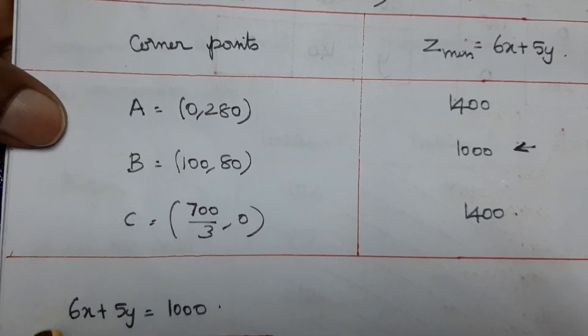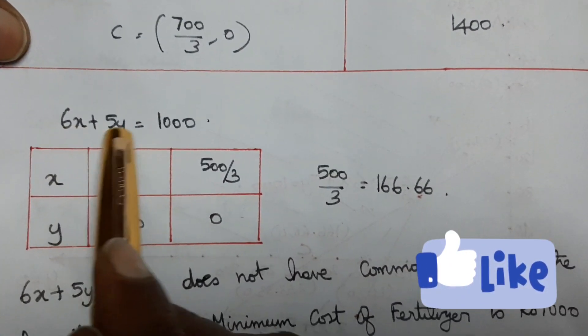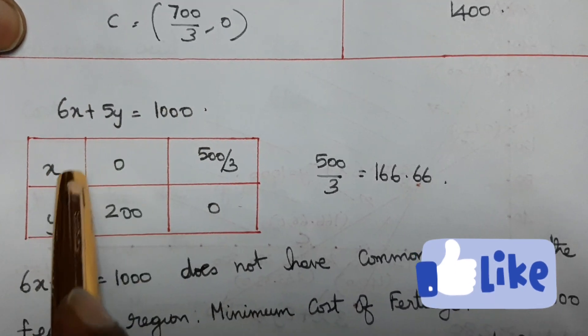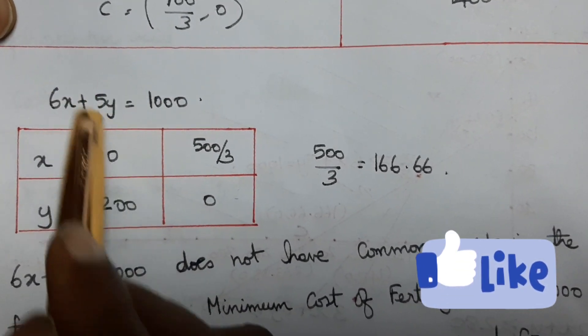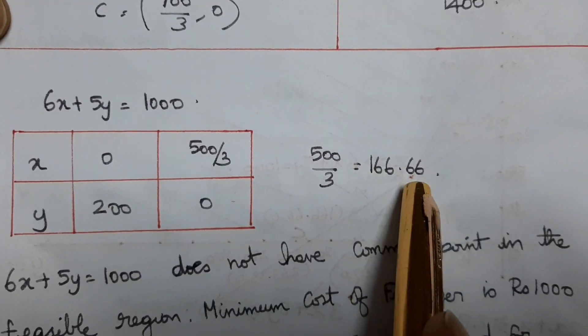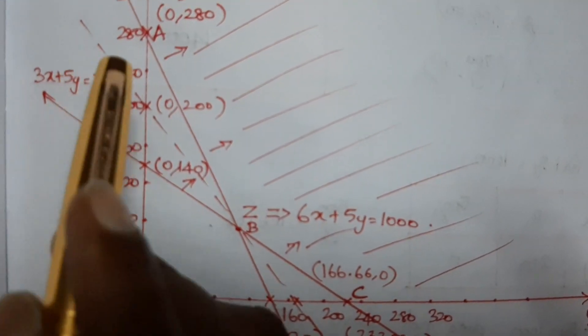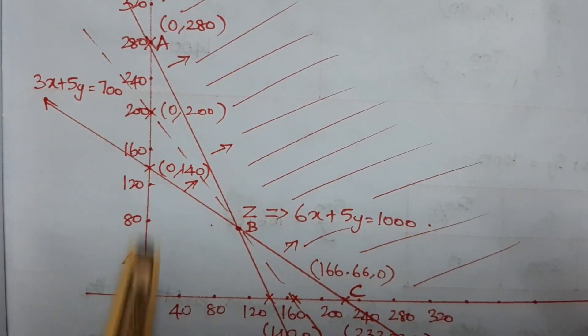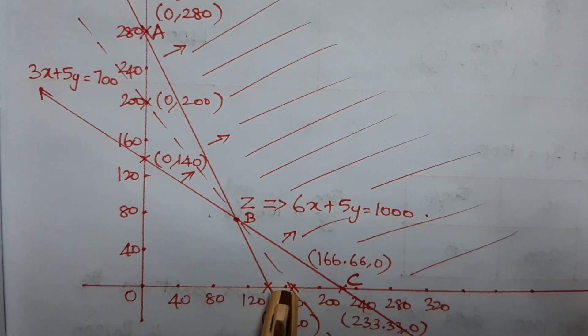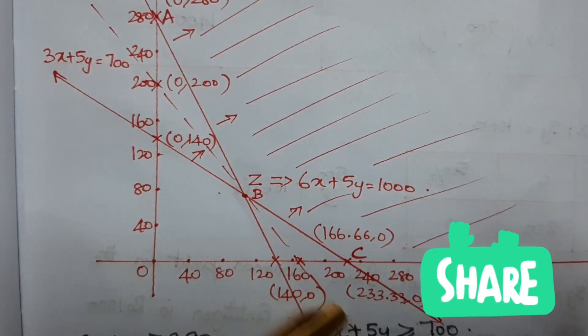The function Z equals 1000 becomes 6x plus 5y equals 1000. When x is 0, y is 200. When y is 0, x is 500 by 3, which is 166.66. This line does not have common points in the feasible region.